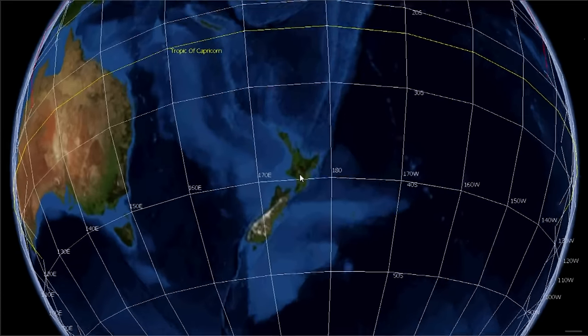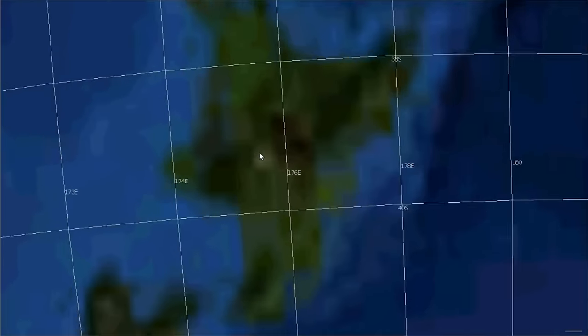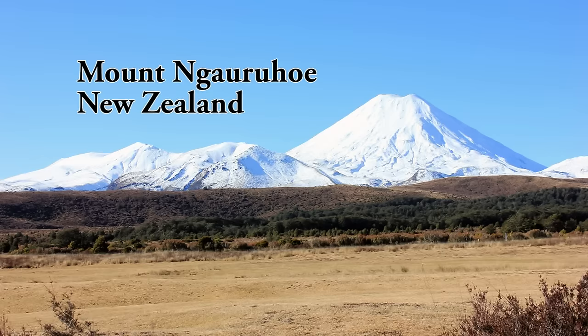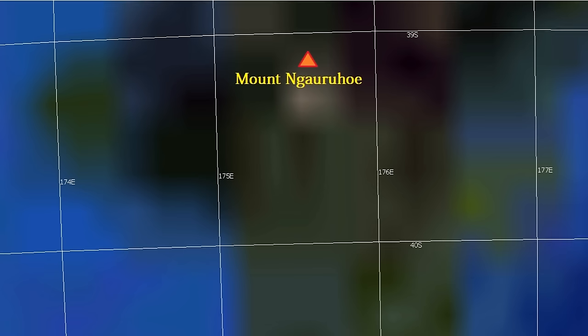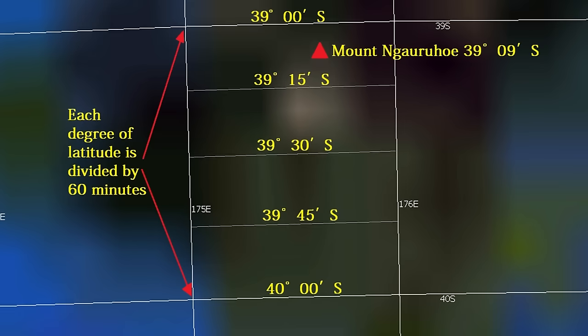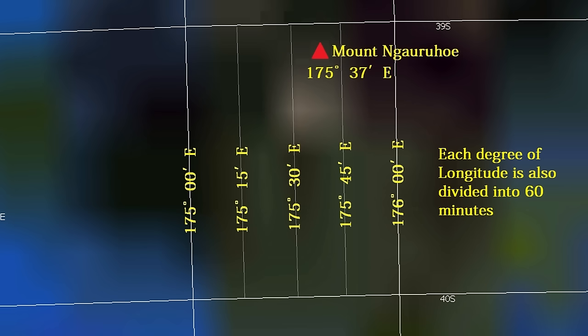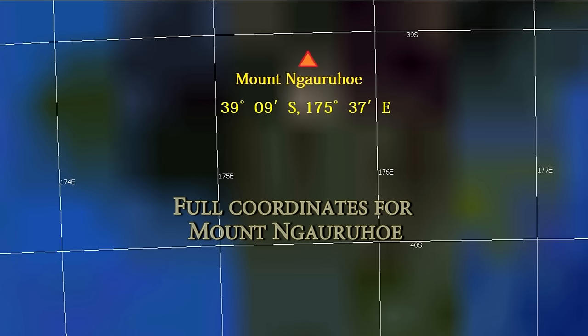Now to show you how to read the coordinates of a precise point. The first example I will use is Mount Narohoe in the North Island of New Zealand. As mentioned earlier, between each degree of latitude or longitude there is a division of sixty minutes. Right on the line it is 00 minutes, then it goes to 01, 02, 03, and so on. At the halfway point it would be 30 minutes, followed by 31 minutes, and so on, until we get to 59 minutes, before clicking to the next degree of latitude or longitude where the minutes would return back to 00.